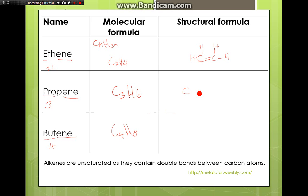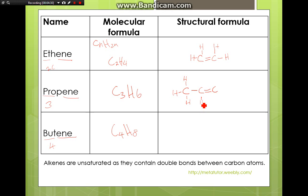For propene, we have three carbons. I'll select any one pair to have the double bond. Then I'll fill in the rest of the bonds, making sure each carbon has four bonds. From the left, this carbon has one bond, so it will have three more bonds joined to hydrogen. The middle carbon already has three bonds taken up, so the fourth bond will be for hydrogen. The final carbon has two bonds taken up, so the last two bonds will be for hydrogen. A quick check: there are six hydrogens in the molecule, which fulfills our molecular formula.